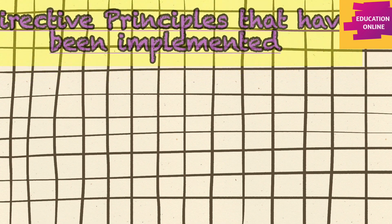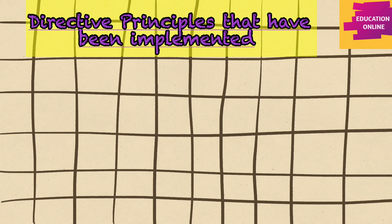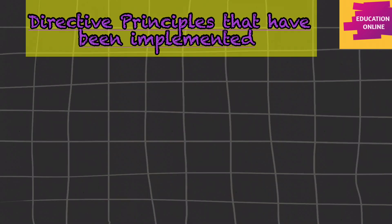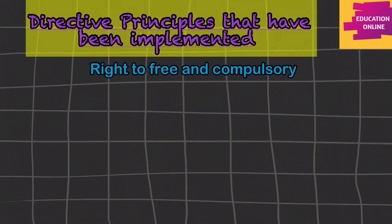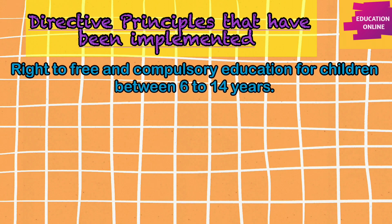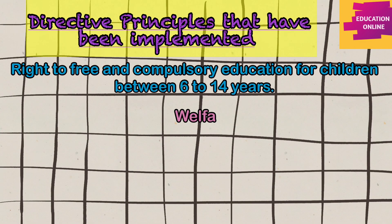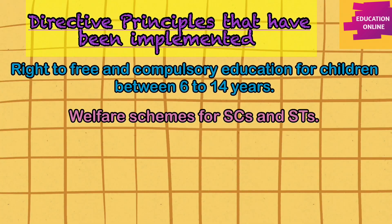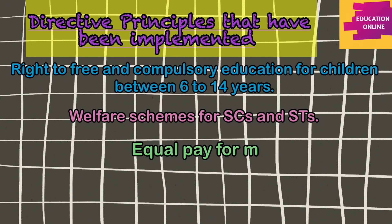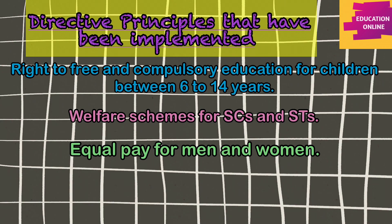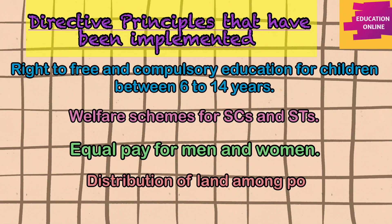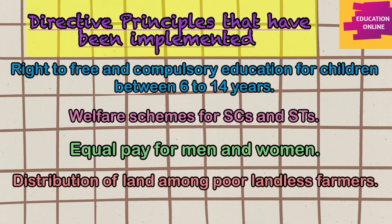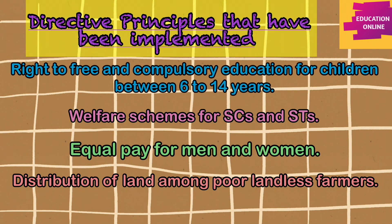Many governments over the years have tried their best to implement some of the directive principles. The right to free and compulsory education for all children between 6 to 14 years has been established. Welfare schemes for scheduled castes and scheduled tribes are also being implemented by central and state governments. Laws have been passed guaranteeing equal pay for both men and women, and also laws have been passed to distribute land among the poor landless farmers. Much has been achieved, but still it's a long way for India to become a welfare state.